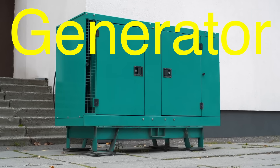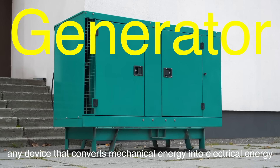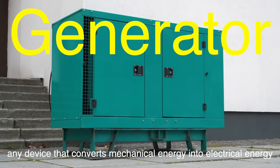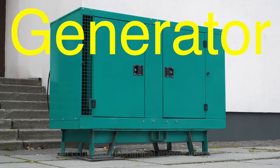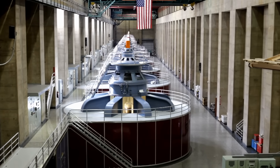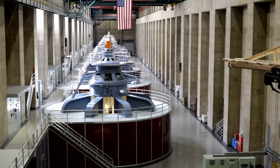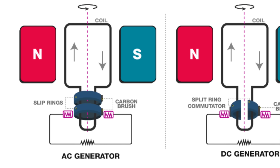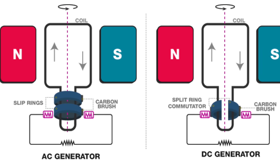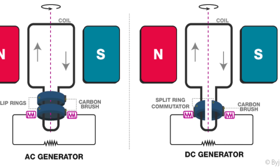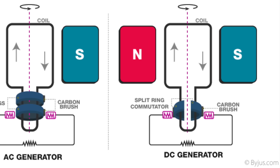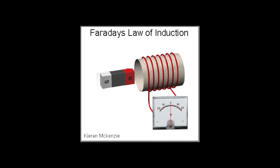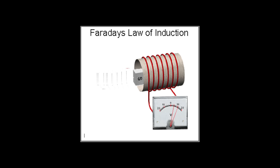A generator, in its broadest sense, is any device that converts mechanical energy into electrical energy. This category includes a wide variety of machines, from the massive power plant turbines that light up entire cities to the small hand-cranked units used in emergencies. Generators can produce either alternating current (AC) or direct current (DC), depending on their design. The basic working principle is rooted in Faraday's law of electromagnetic induction, which states that a voltage is induced in a conductor when it experiences a change in magnetic field.